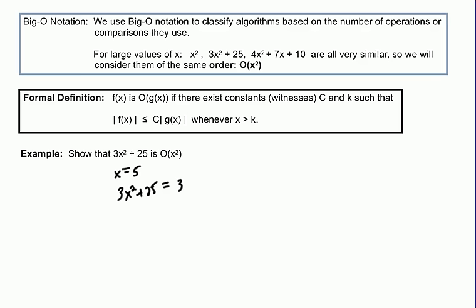If x equals 5, this would end up being 3 times 5² plus 25, which would be 75 plus 25, which would equal 100. So, when x equals 5, this function 3x²+25 is 100.